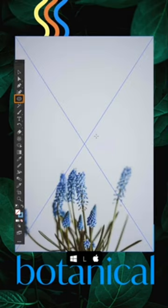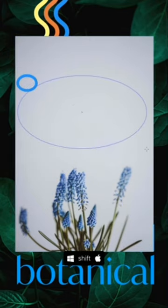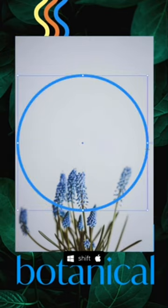Press the letter L on your keyboard to activate the Ellipse tool and click and drag while holding the Shift key to create a perfect circle.